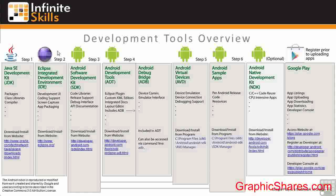The Eclipse IDE provides the platform of tools you'll use for coding and testing. You'll download and install it from the Eclipse website. It includes a development user interface, screen capture, and app packaging. The Android Software Development Kit provides the code libraries and support for specific Android releases. You'll download and install SDKs from the Android website. They include code libraries, release support, a debugging interface, and API documentation.